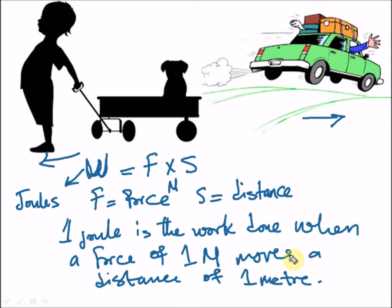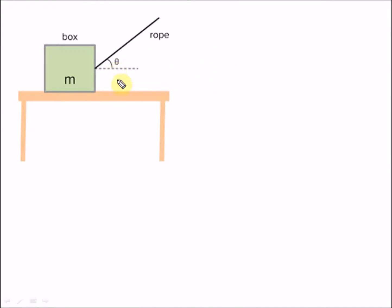There are some cases where you can have a force which is inclined at an angle. In this scenario, the force is inclined at an angle theta to the displacement. For example, a boy ties a particular box and lifts it up with a particular force using a rope, so the force is at an angle to the displacement.